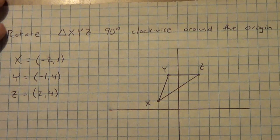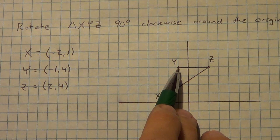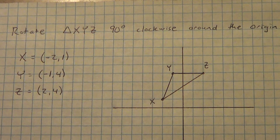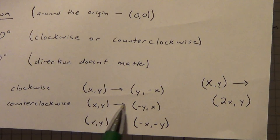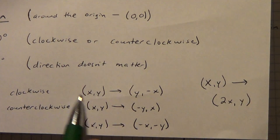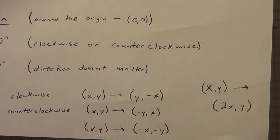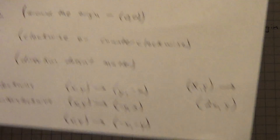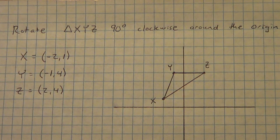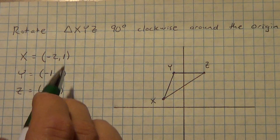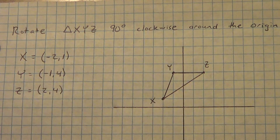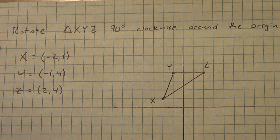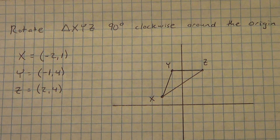Got two more examples. This time we're going to rotate a triangle 90 degrees clockwise around the origin. I'm going to show you a different way to do a clockwise or counterclockwise rotation that's really pretty simple. Copy this down: points are X at (negative 2, 1), Y at (negative 1, 4), Z at (2, 4). Pause the video, get all this copied down, then come back and we'll do the example.